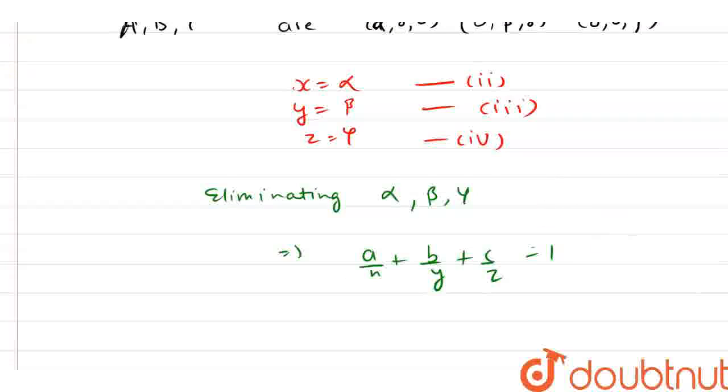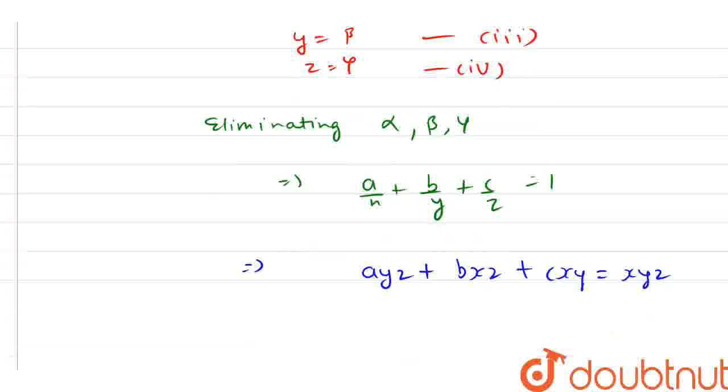So on solving, the value here is A into YZ plus B into XZ plus C into XY equals XYZ. So now we can say that this is our required answer.